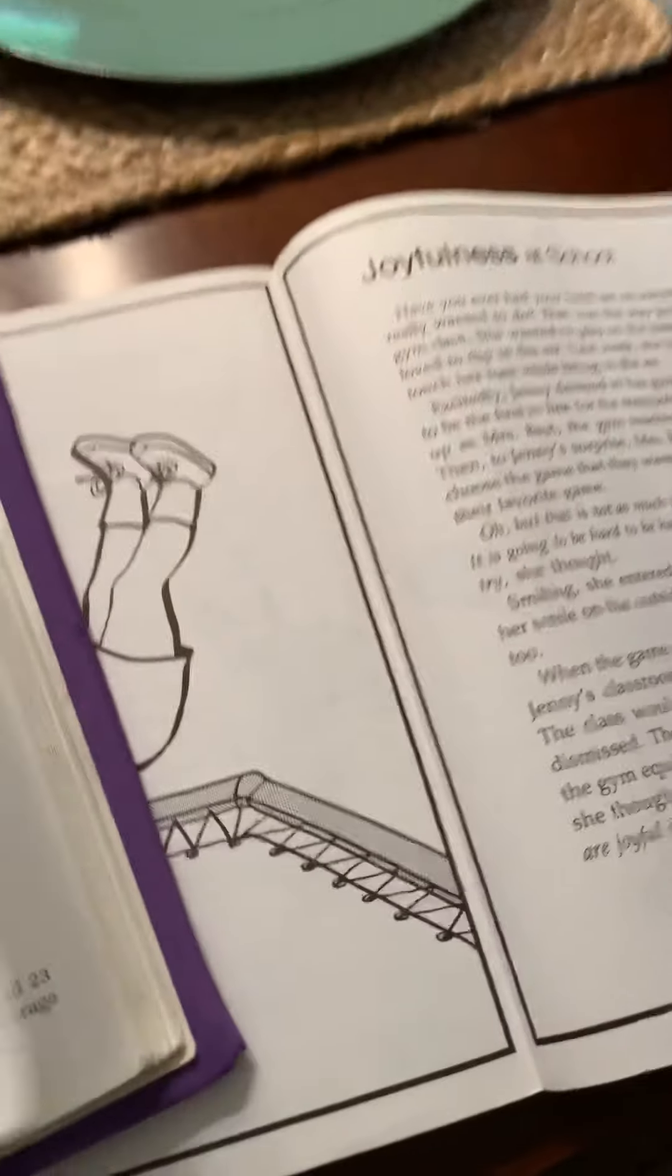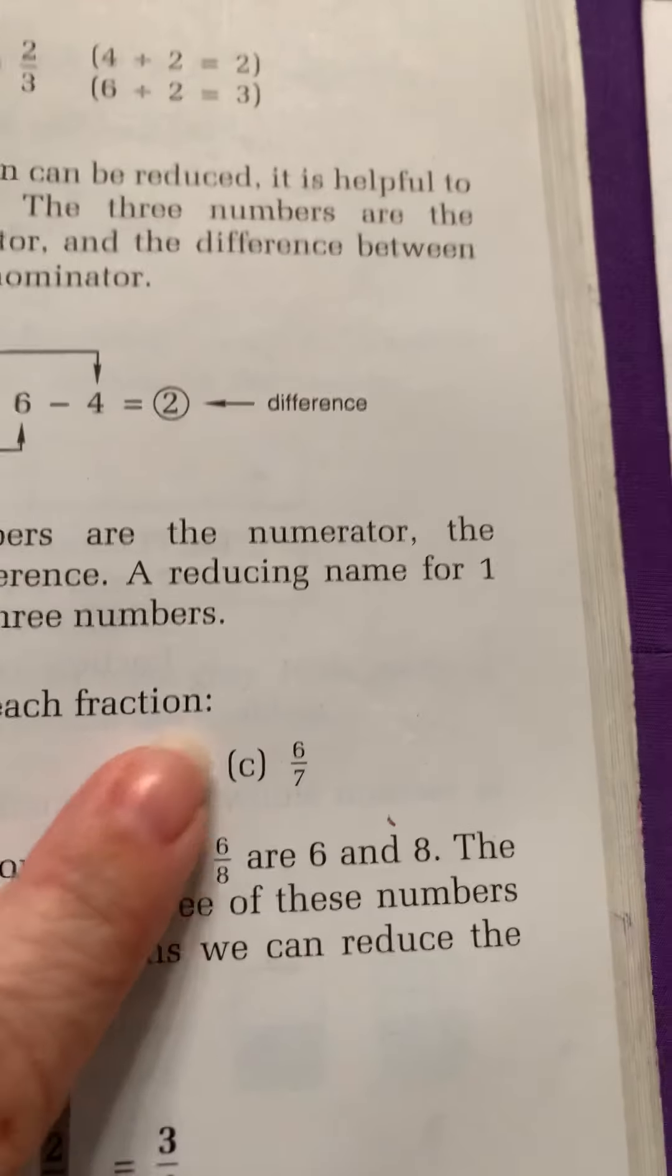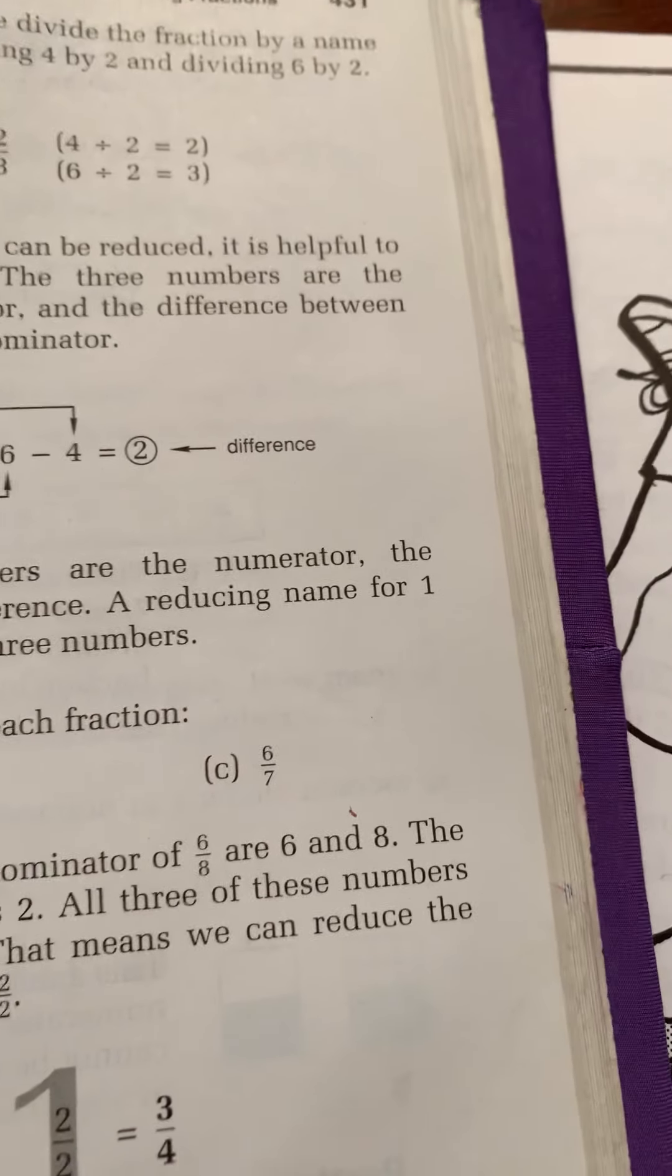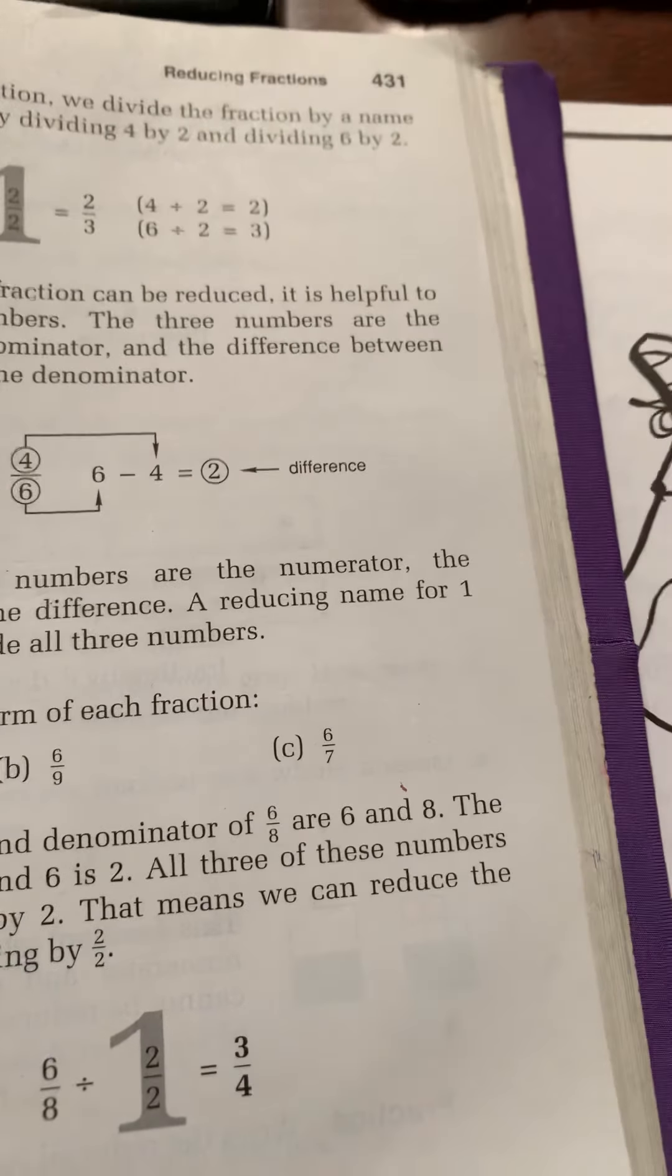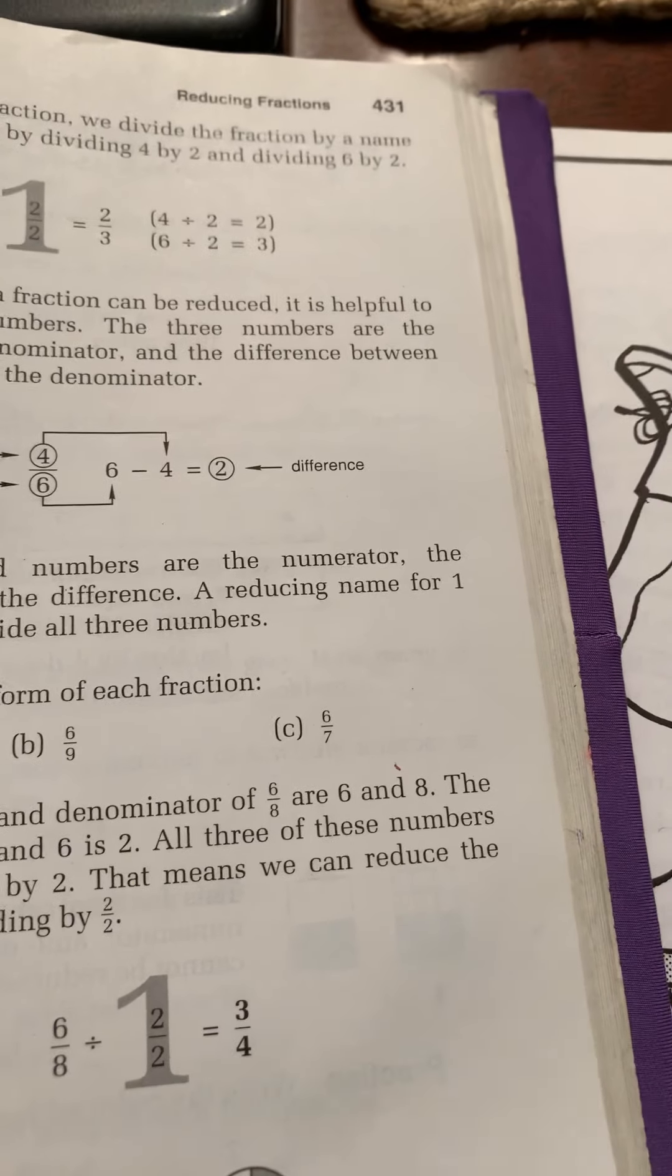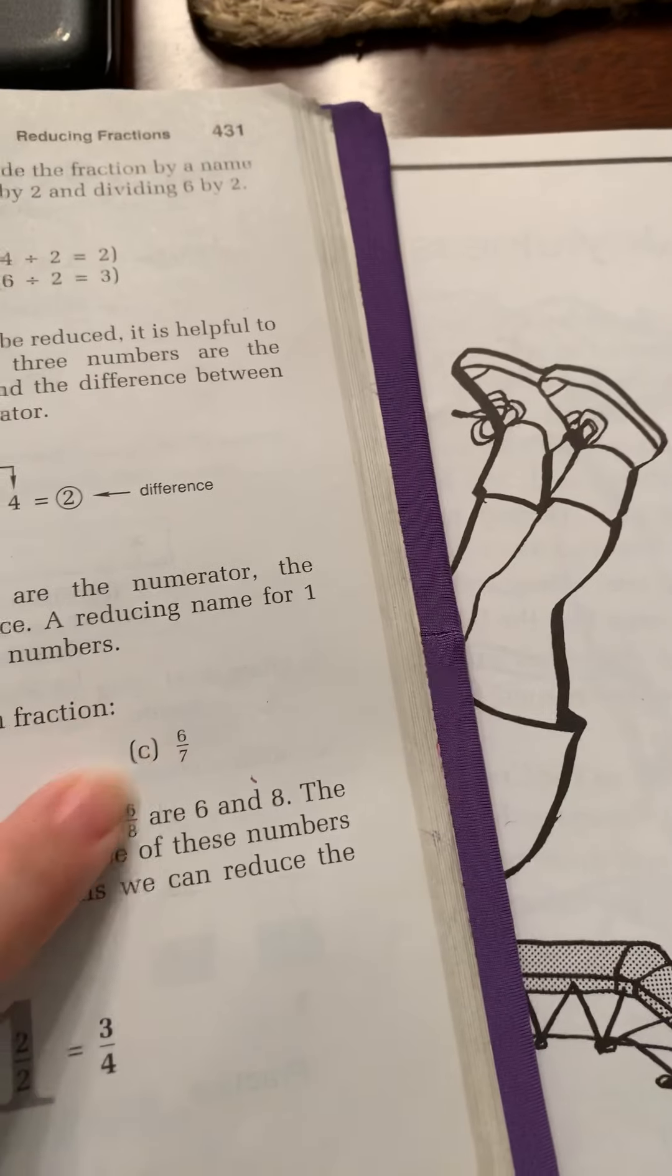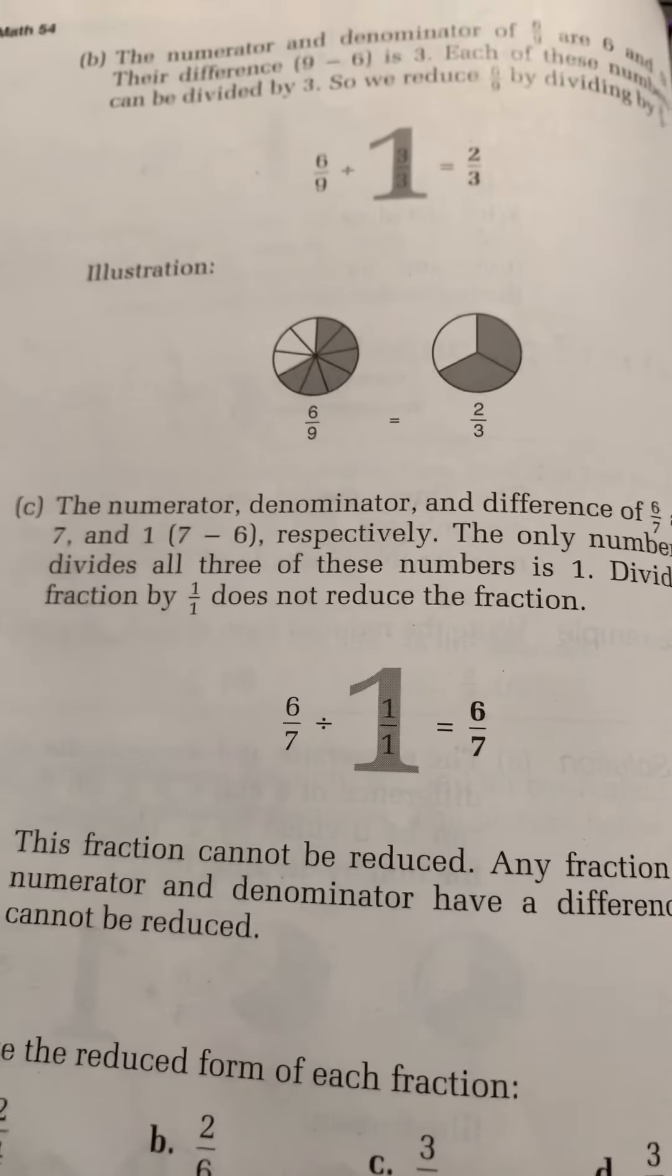All right, and then C was six-sevenths. Well, the difference between six and seven is one. So chances are these are not going to be able to be divided any smaller.